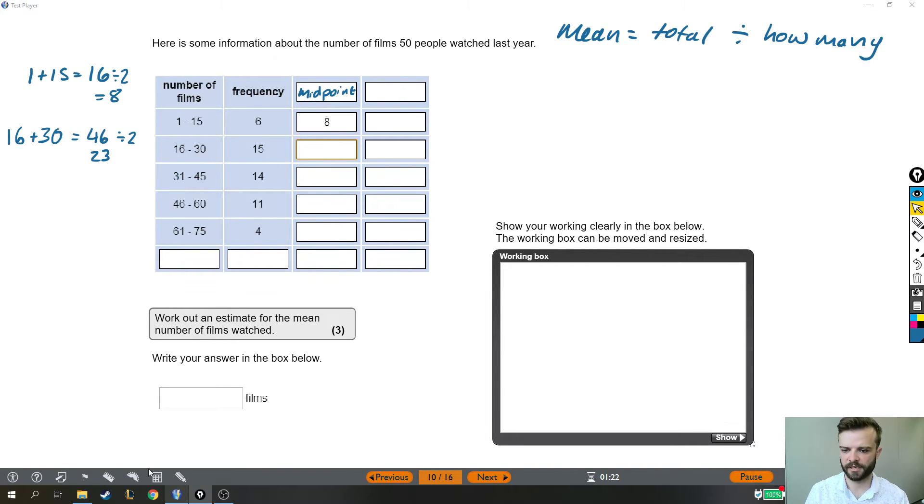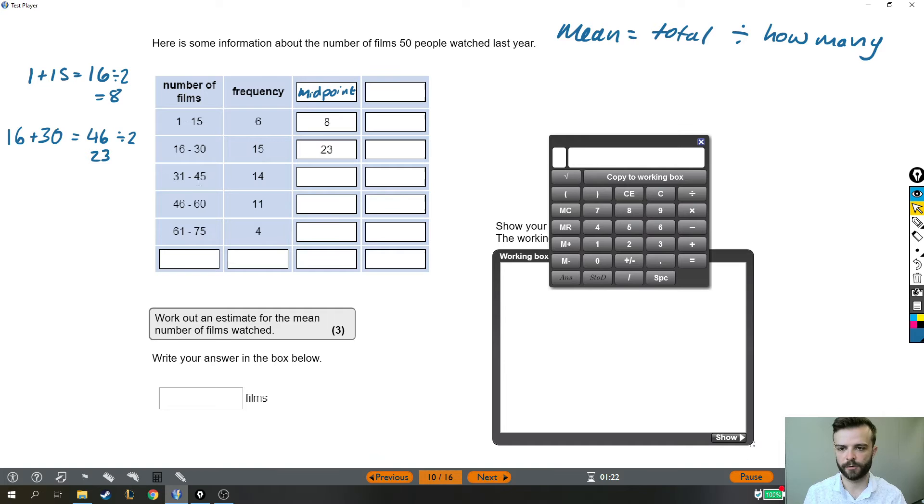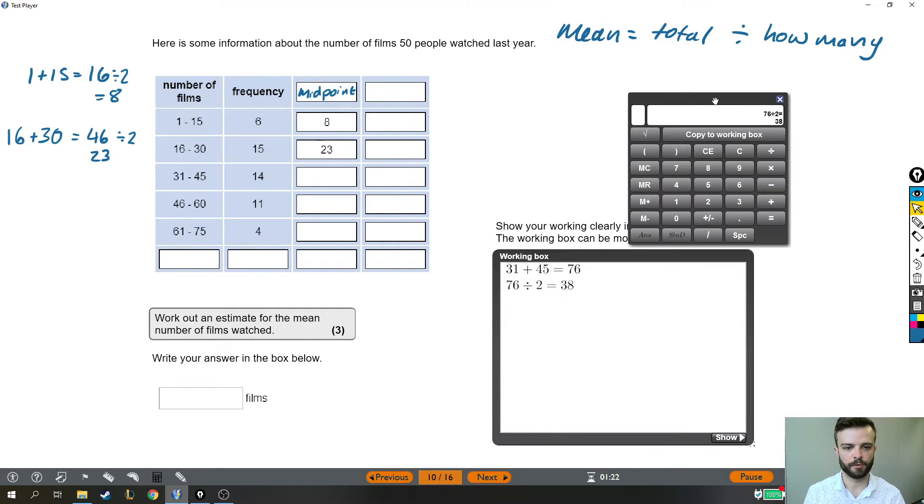And actually, this is a calculator paper, so perhaps I should be doing these on the calculator and copying them into the working box. So actually, for the next few numbers, I am going to do that. So on the calculator, my next midpoint is halfway between 31 and 45. So 31 plus 45 gives me this number, which I then divide by 2 to get the midpoint, which is 38. That's my next one. A couple more to go. I'm going to do 46 add 60 and then half that to get the midpoint. So my next midpoint is 53. And finally, halfway between 61 and 75, I add them together, divide it by 2, it's 68. Okay, so those are all my midpoints.